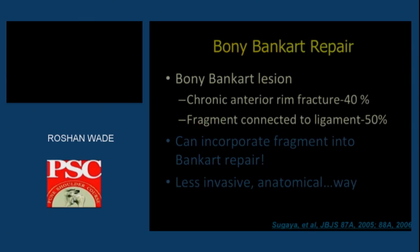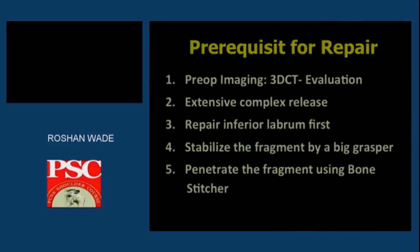Bony Bankart repair may address a chronic anterior rim fracture seen in almost 40% of cases, or an erosive type of bony defect associated with a fragment connected to the ligament. If you have a fragment connected to the ligament, one can fix it and create a good Bankart repair with bone incorporation onto the glenoid — this is a less invasive and most anatomical way of reconstructing the bony Bankart repair.